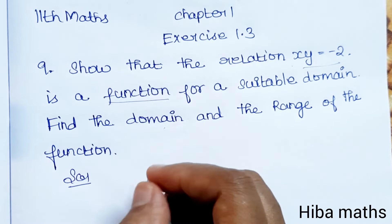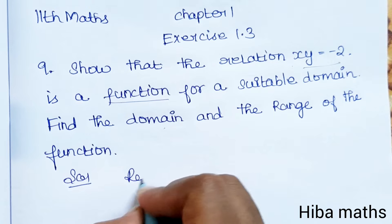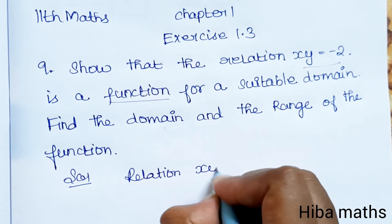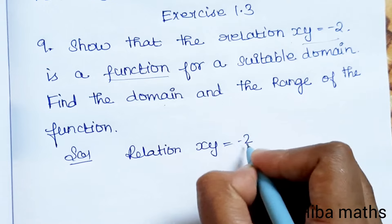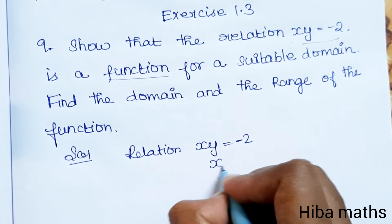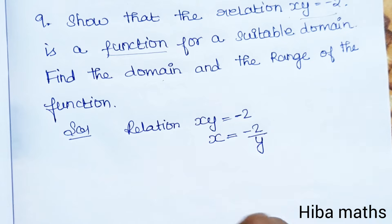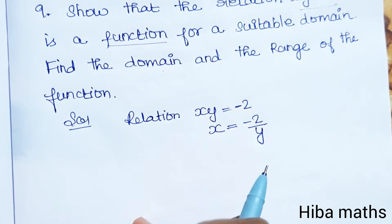Solution: The relation given is xy equals minus 2. We can write this as x equals minus 2 over y. To test if this is a function, let f(x1) equal f(x2). If x1 corresponds to y1, then we have minus 2 over y1.